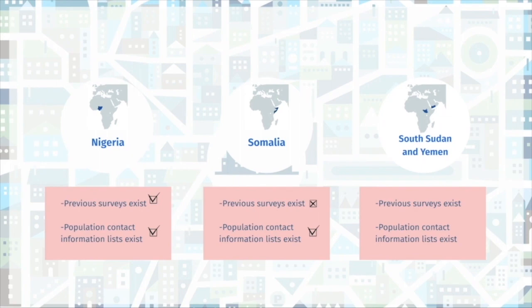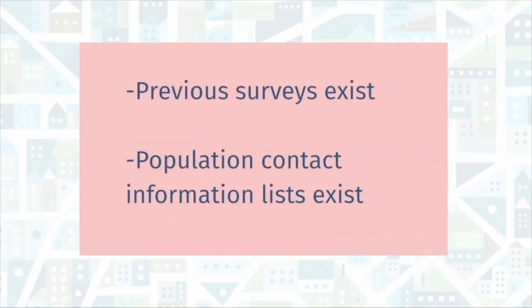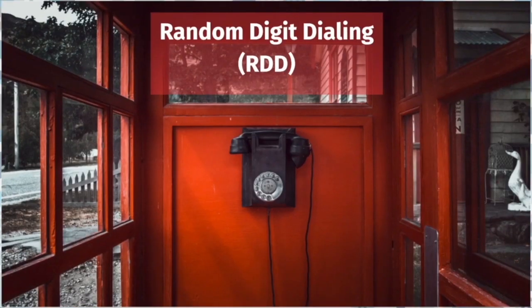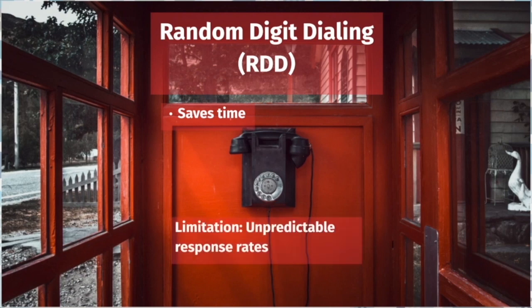In the third case, in South Sudan and Yemen, neither previous surveys nor population contact lists existed. To overcome this barrier, the researchers used a technique known as random digit dialing, or RDD, to generate a sample. RDD can save time because you're not wasting time calling non-existent or disconnected numbers like you more than likely would with outdated population lists. However, response rates are unpredictable. On average, only 10% of the numbers called resulted in successful interviews, which prolongs the overall survey's duration.